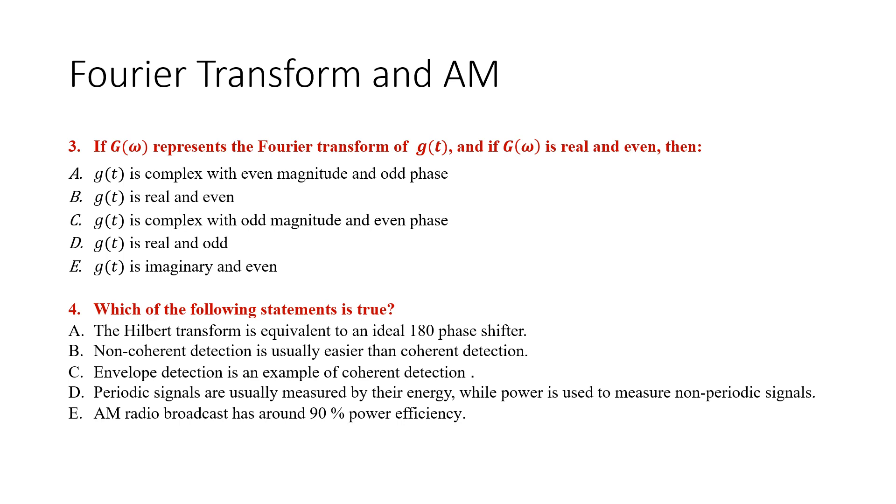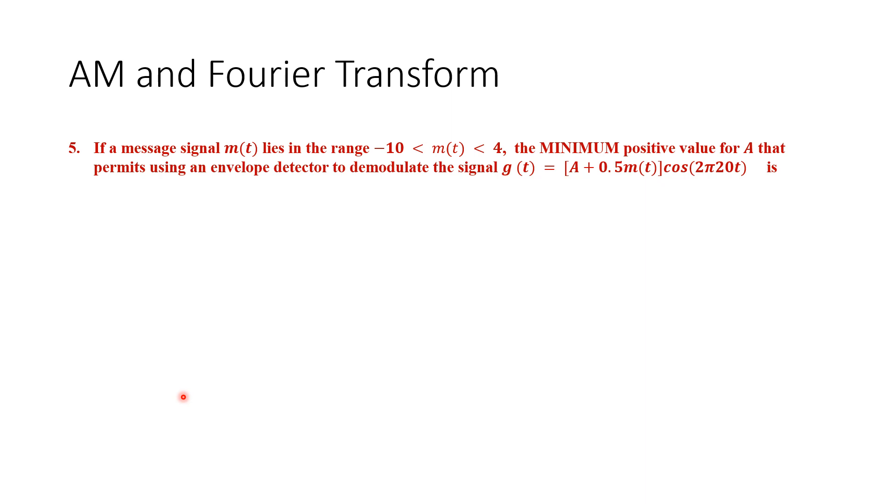You can pause the video if you need more time. The fifth question says a message signal m(t) lies between -10 and 4. The minimum positive value for A that permits using an envelope detector to demodulate the signal given by [A + 0.5m(t)]cos(2π20t) is: select the proper answer 5, 4, 10, 14, or 6. Fill the table with the letter.